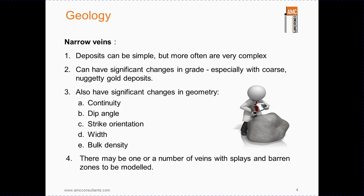Narrow vein deposits can be simple but more often deposits are very complex. There are often significant changes in grade both along and across the vein, for example with coarse nuggety gold deposits. Narrow veins usually have significant changes in geometry affecting their structural and grade continuity. The dip angle and dip direction is often highly variable, as is commonly the strike. The width across the vein can vary as it pinches and swells, and there can be changes in bulk density that will affect overall tons. There also may be one or a number of veins with splays and barren zones that need to be modelled.